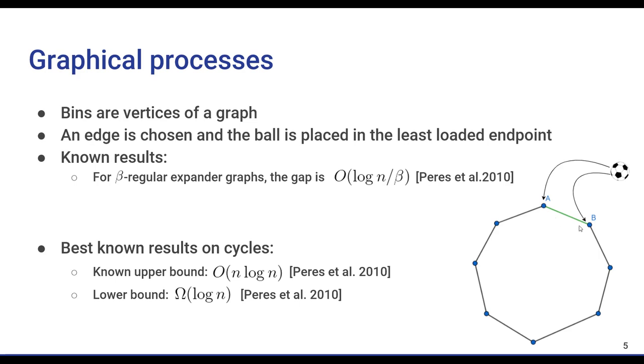For example, the two-choice process corresponds directly to the case where the graph is a complete graph. In this setting, it's been shown that the gap for beta-expander graphs is big O of log n divided by beta, with high probability.